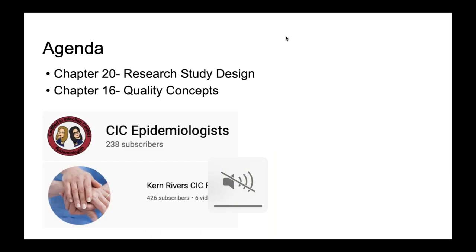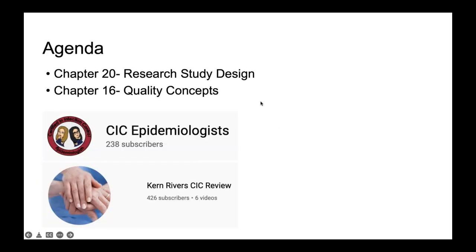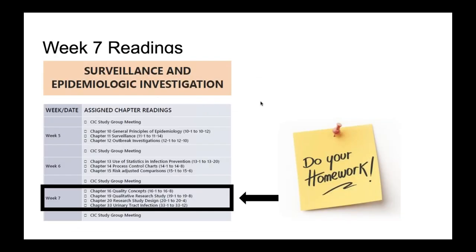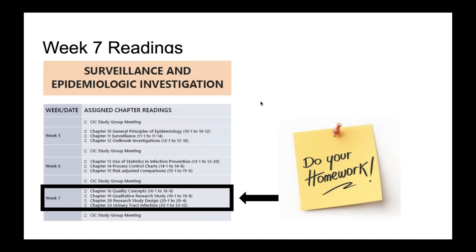We're going to be focusing on Chapter 20, which is research study design, as well as Chapter 16, quality concepts. Remember, I mentioned last time we're going to be skipping week six, which is use of statistics, control charts, risk adjusted comparisons — primarily Chapter 13 — because Danielle is going to be putting together a two or three part series on statistics, since she's literally going to have her whole PhD in epidemiology. That's why we're skipping week six for now, because it's going to be covered later.